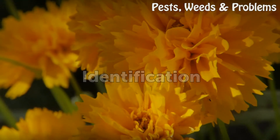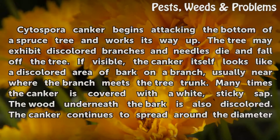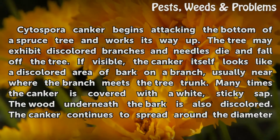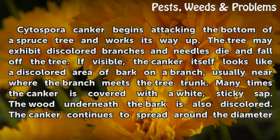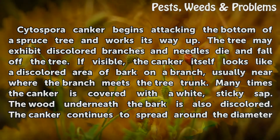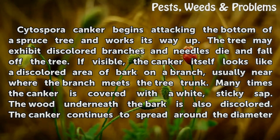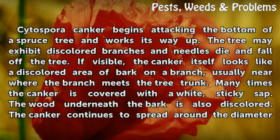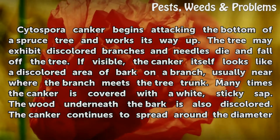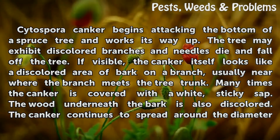Identification. Cytospora canker begins attacking the bottom of a spruce tree and works its way up. The tree may exhibit discolored branches, and needles die and fall off the tree. If visible, the canker itself looks like a discolored area of bark on a branch, usually near where the branch meets the tree trunk. Many times the canker is covered with a white, sticky sap.